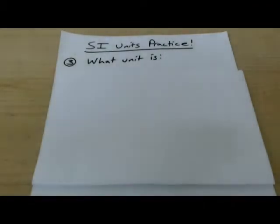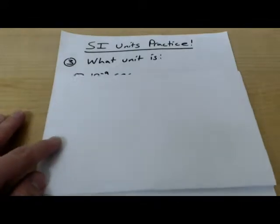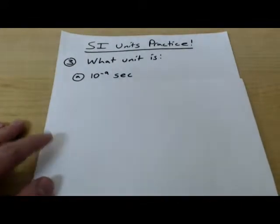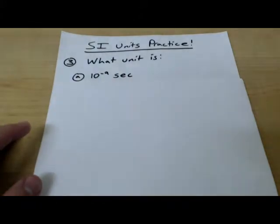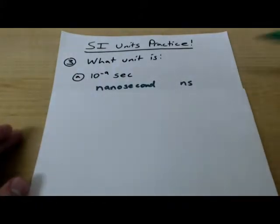Problem number three. For this one, we're going to be given a value and we'll try to determine what the name of that unit is. So, for example, what is ten to the negative nine seconds? Well, that's going to be a nanosecond. And the abbreviation is NS.